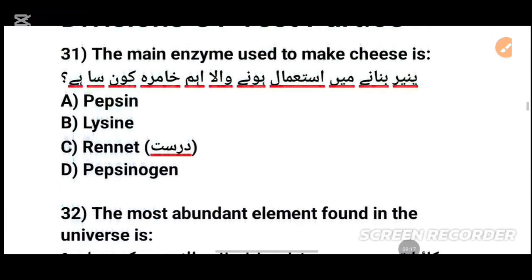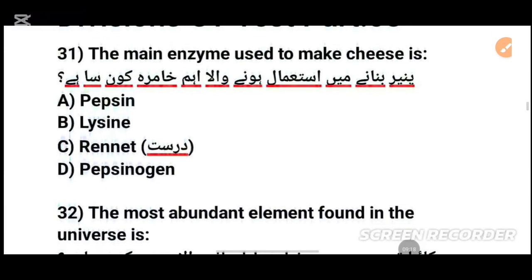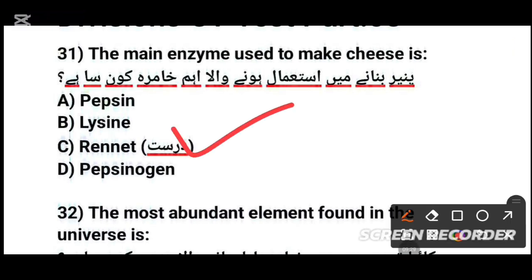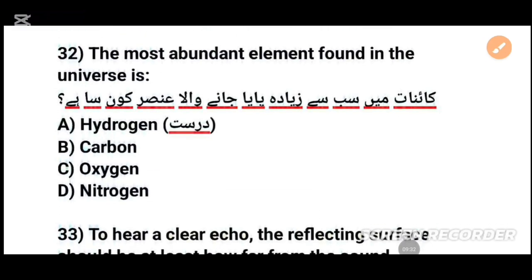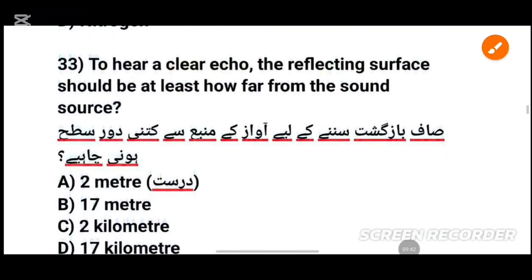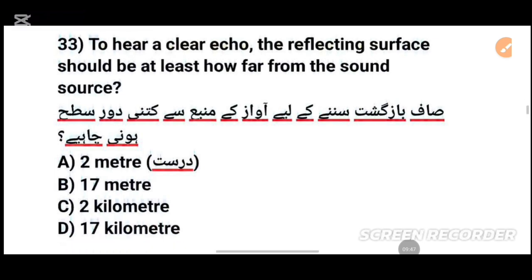MCQs number 31: The most abundant element found in the universe is dash. کائنات میں سب سے زیادہ پائے جانے والا عنصر کونسا ہے؟ MCQs number 33: To hear a clear echo, the reflecting surface should be at least how far from the sounding source?